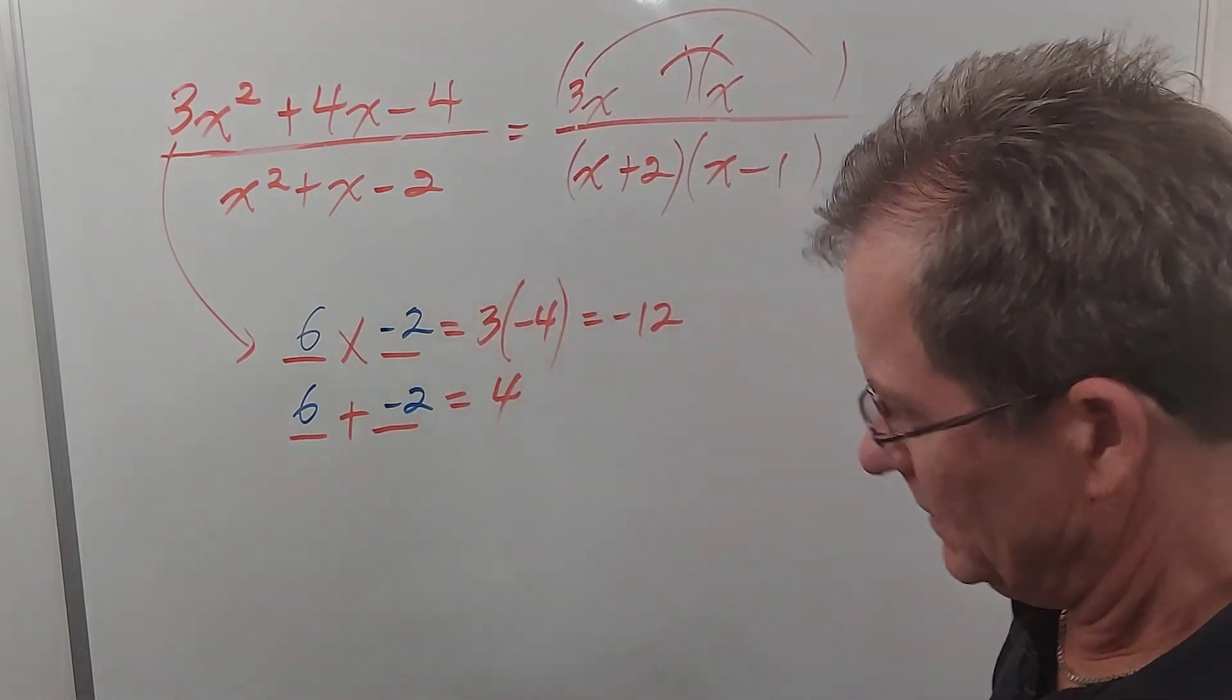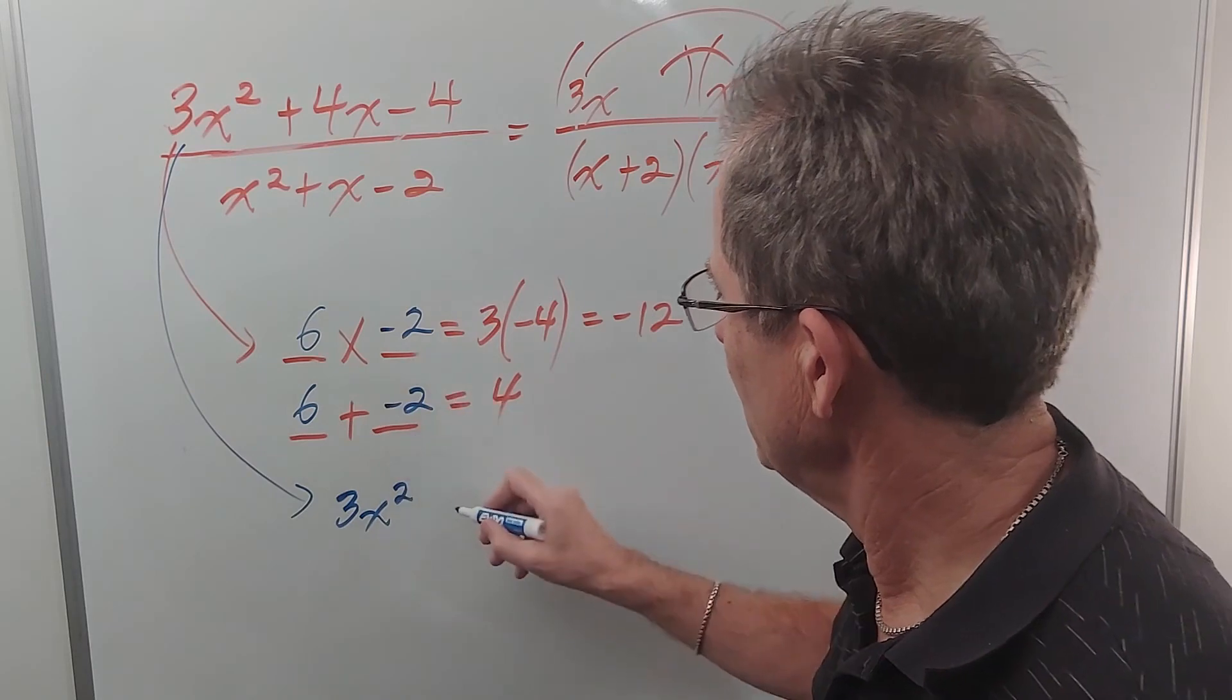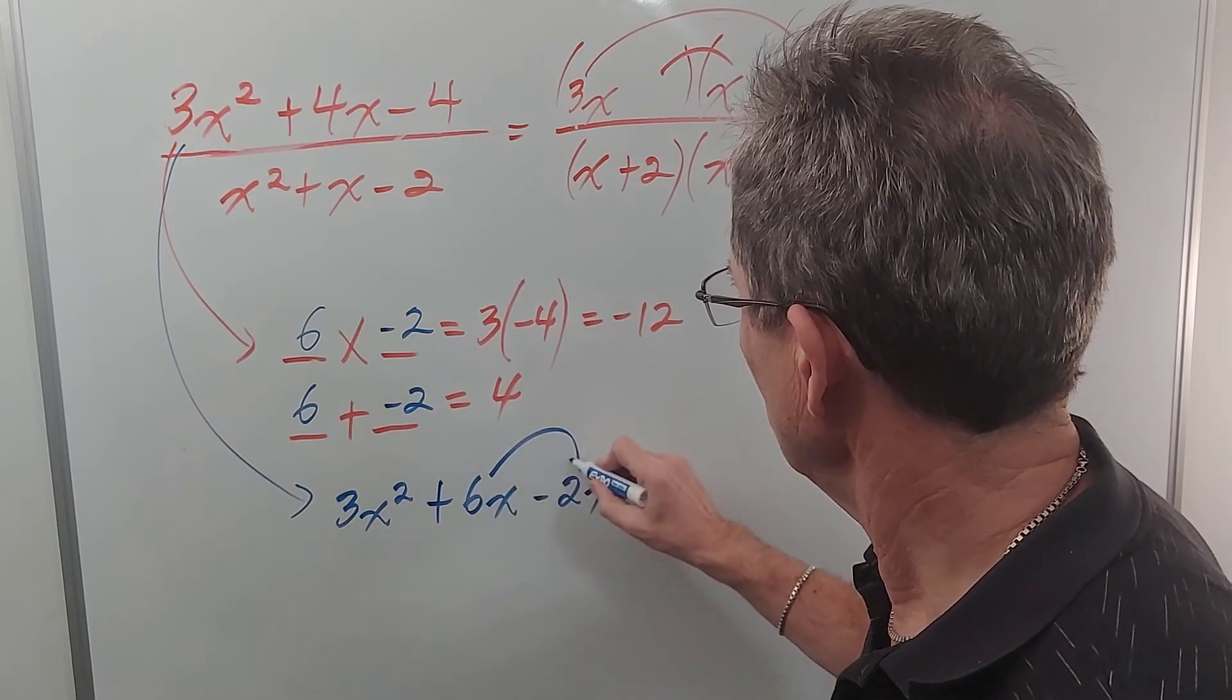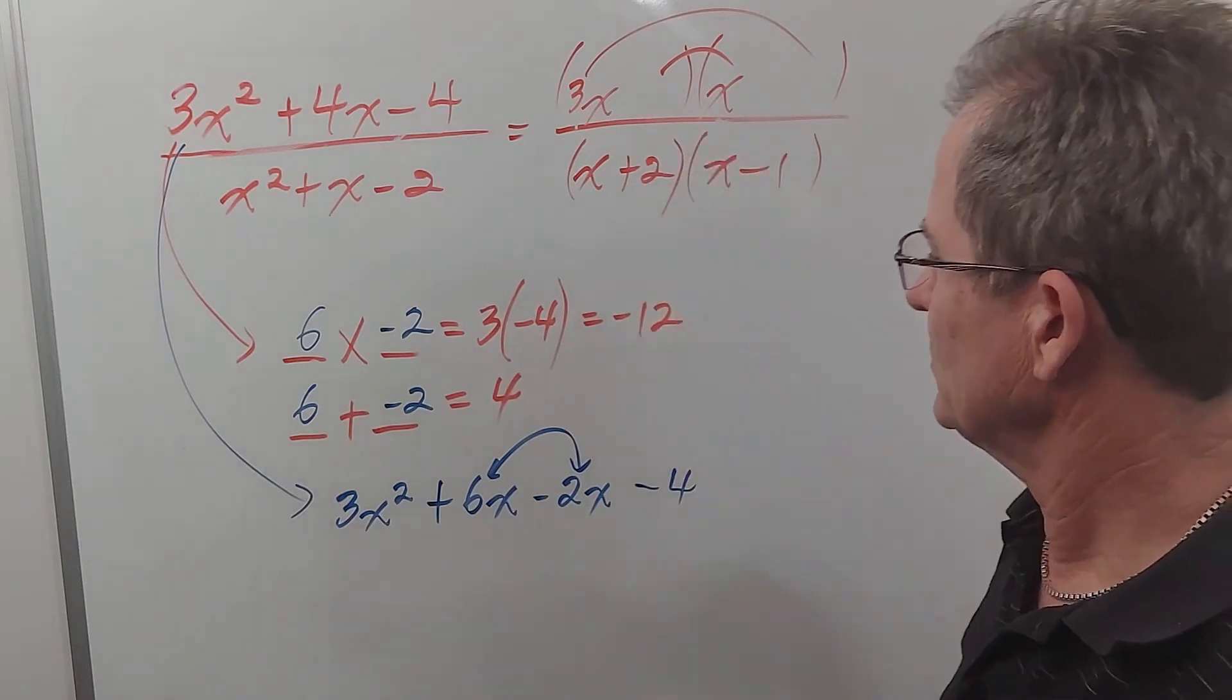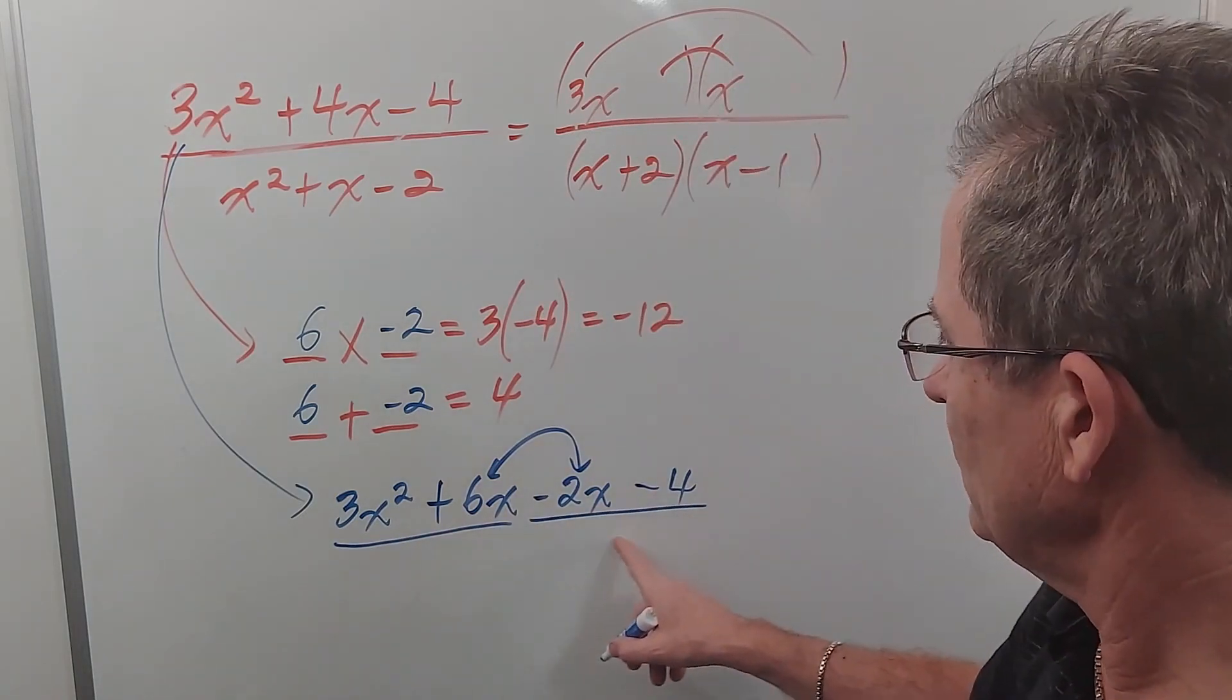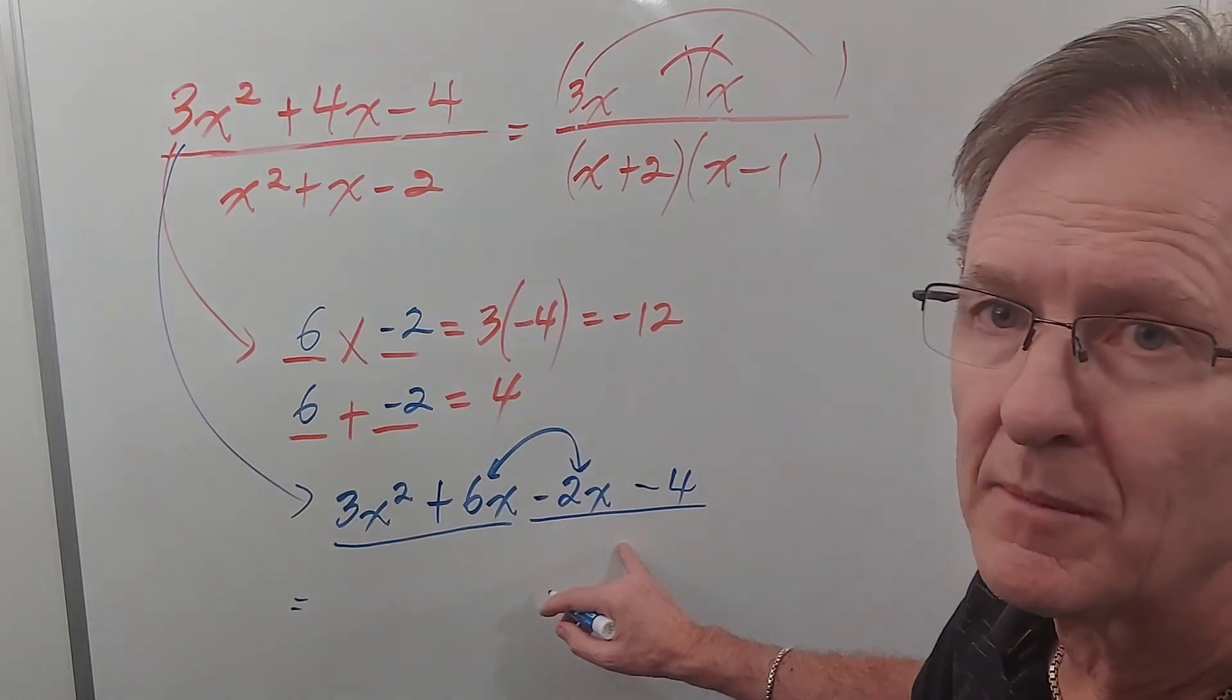So what we do next is we rewrite this complex trinomial as 3x squared and then instead of 4x we put 6x and negative 2x followed by the negative 4. It turns out the order in which you do these two doesn't matter. You'll get the same answer in the end. The factors will just be switched around. And then we do something called factoring by grouping. We consider those two together and those two together. Because if this is going to factor then they'll have a common factor as you'll see.